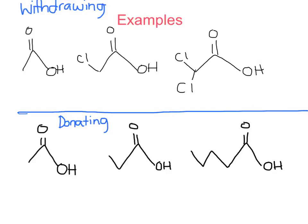Now let's look at some examples of withdrawing and donating groups affecting carboxylic acids. In this first example, we'll look at withdrawing groups. As you can see here, the first one has no chlorine atoms on it, the second one has one, and the third one has two. Pause the video and see if you can determine which one is the most acidic and which one is the least acidic. As you probably guessed, the most acidic is the last one, which has two chlorine atoms on it. Then the middle one is going to be the one with one chlorine atom, and then the last one is going to be the one with no chlorine atoms. The reason is because the one with two chlorine atoms, which are withdrawing groups, is pulling the electron density towards them, making it more acidic. I would draw an arrow showing that it gets most acidic as it goes to the right.